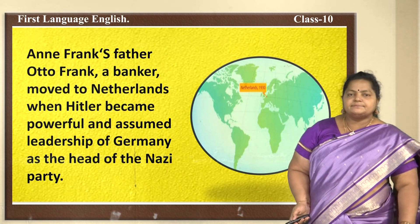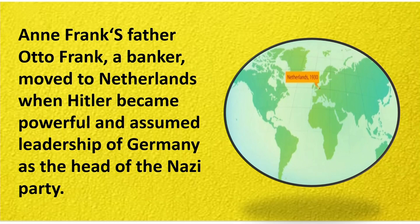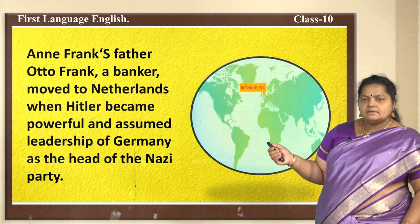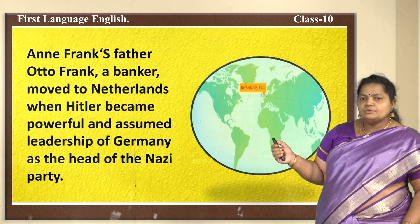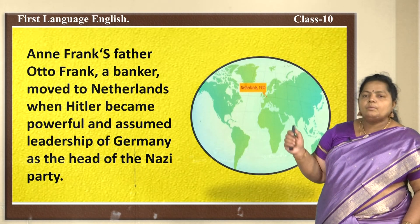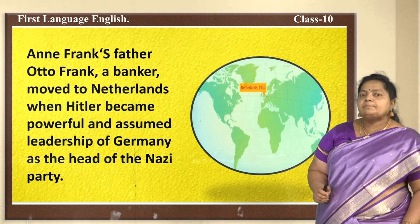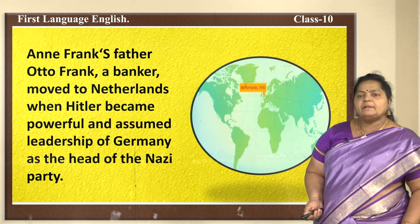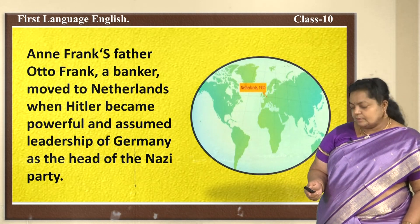Anne Frank's father, Otto Frank, was a banker who moved to the Netherlands when Hitler became powerful and assumed leadership of Germany as head of the Nazi Party.